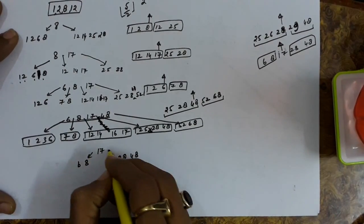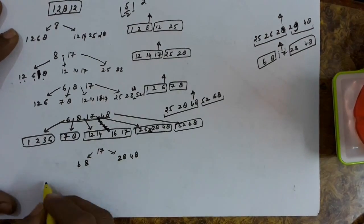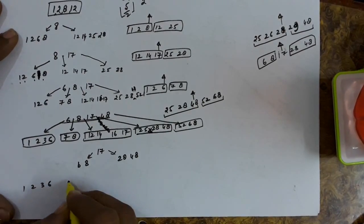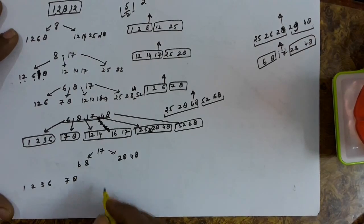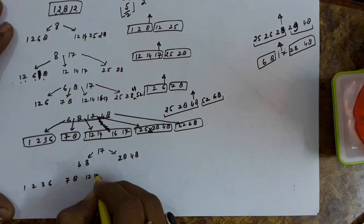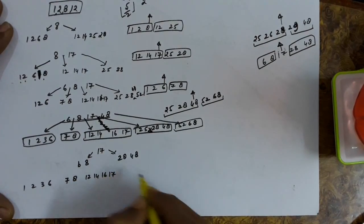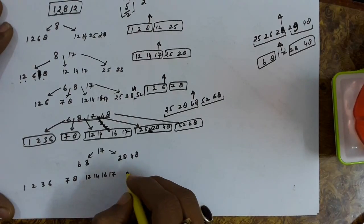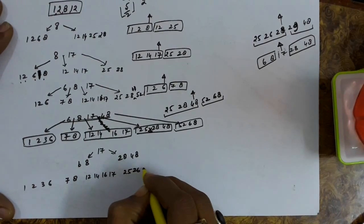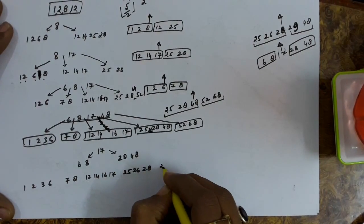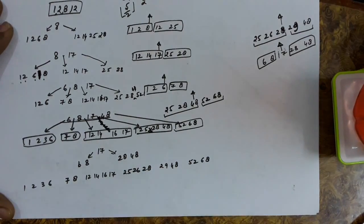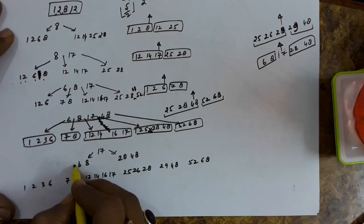After all splits, the leaf nodes are: 1, 2, 3, 6; then 7, 8; then 12, 14, 16, 17; then 25, 26, 28 in one node; then 29, 48 in another node; and 52, 68 remains as a separate node. The internal structure has 17 as root, with children 6, 8 on the left subtree and 28, 48 on the right subtree.